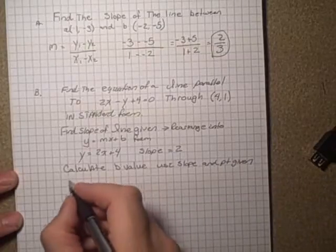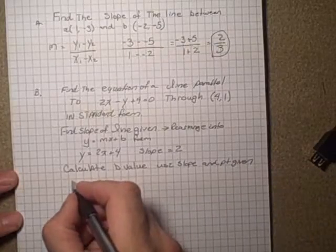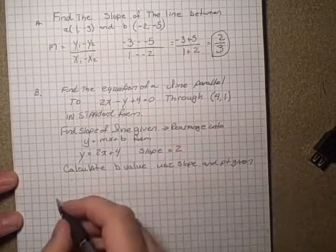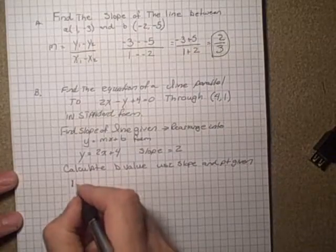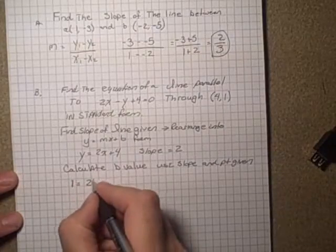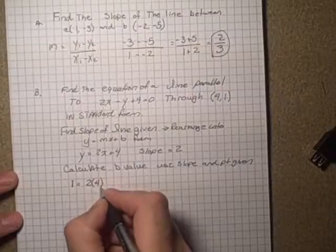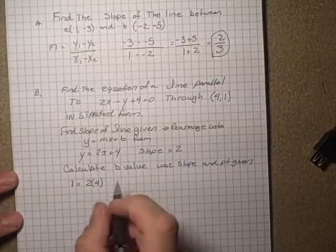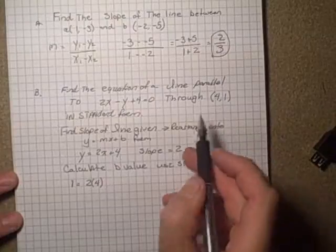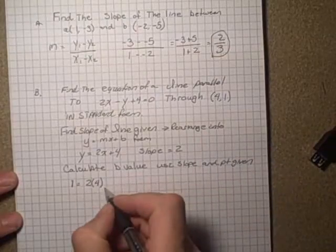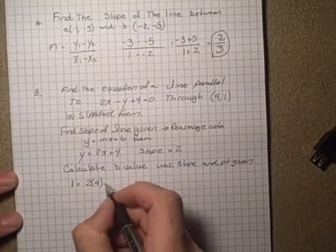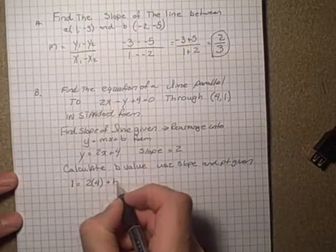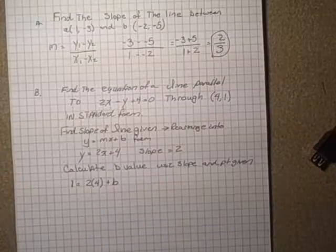In our case, that would look like this: y in our point is 1, so 1 = 2 times 4, that's our x point given in the question, plus b, which is our y-intercept that we will calculate now.